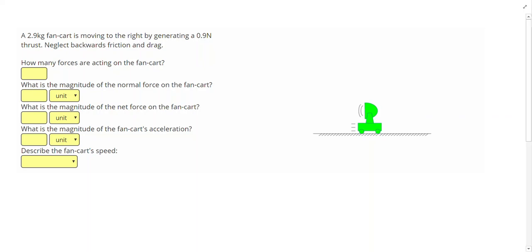In our first sample problem, a 2.9 kilogram fan cart is moving to the right by generating a 0.9 Newton thrust. Neglect backwards friction and drag.